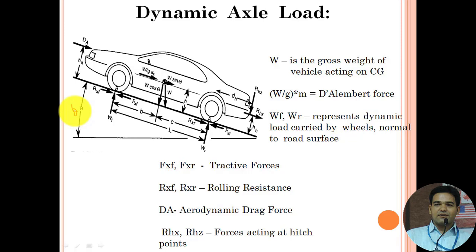First, W indicates the gross weight of the vehicle, acting at the CG. The direction of weight must be toward the center of gravity of the Earth. For simplification, we generate two components of this weight: one perpendicular to the plane, which becomes W·cos θ, and one parallel to the plane, which becomes W·sin θ.